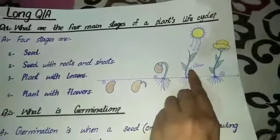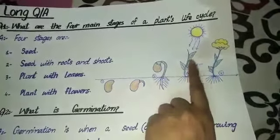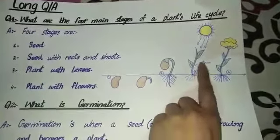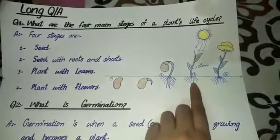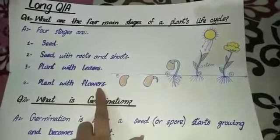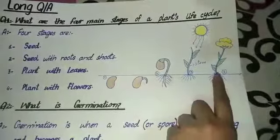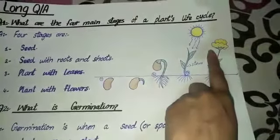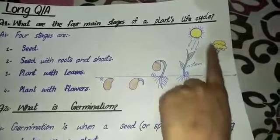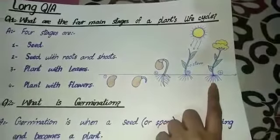Sunlight اس کو direct sun سے provide ہوگی۔ جب basic things مل رہی ہوں گی تو اس پر leaves grow ہونا start ہو جائیں گے — یہ اس کا third stage ہے۔ The last stage is plant with flowers۔ جب plant پر flowers بننا شروع ہو جائیں تو یہ last stage ہے۔ اب ایک fully grown plant بن گیا ہے جس پر flowers لگ چکے ہیں کیونکہ اس کی basic needs پوری ہو چکی ہیں۔